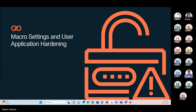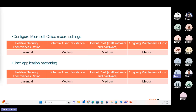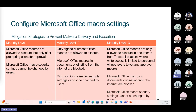So let's jump into macro settings and user application hardening. Focusing on office macros and user application hardening — we put those together because there is a bit of overlap in the way they work. In the table, as you see, there are levels showing the potential user resistance, the relative security effectiveness rating, the update cost, and the ongoing maintenance cost, with ratings for each. If you remember, we mentioned the ACSC Essential 8 has three maturity levels for each control. In maturity level one for macros, office macros are allowed to be executed, and office macro security settings cannot be changed by users.